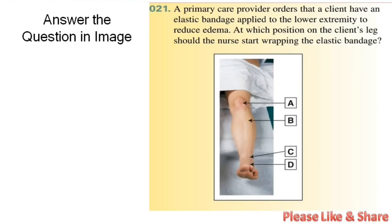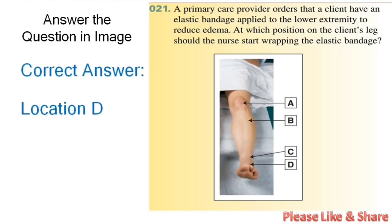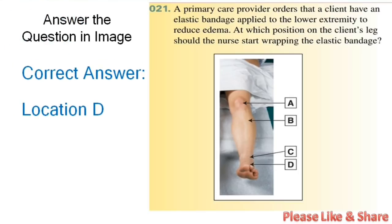Next question: Primary care provider orders that the client have an elastic bandage applied to the lower extremity to reduce edema. At which portion of the client's limb should the nurse start wrapping the elastic bandage? Correct answer is location D — from the foot. The elastic bandage will start from the foot and end up to the knee.